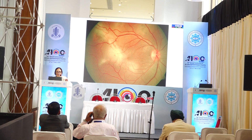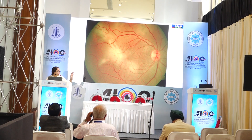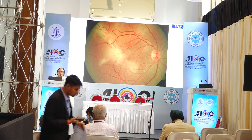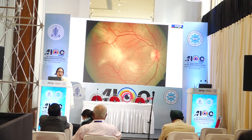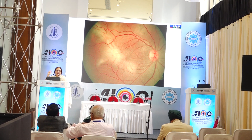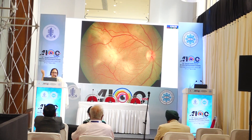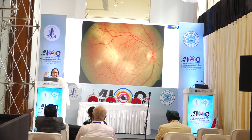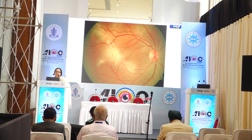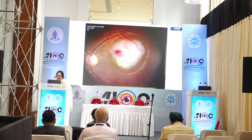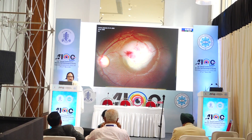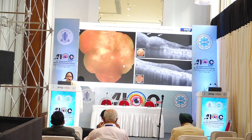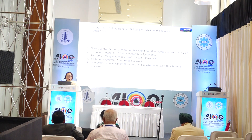When you observe choroiditis and feel there is something in the subretinal space, these are called subretinal lesions or subretinal deposits. I am going to talk about what to do if you see any subretinal lesions in the fundus. These subretinal lesions may appear yellow or they may appear white, and we will go over how you see them.